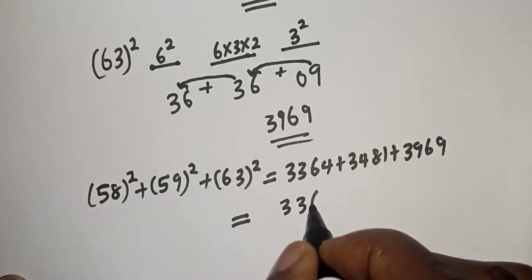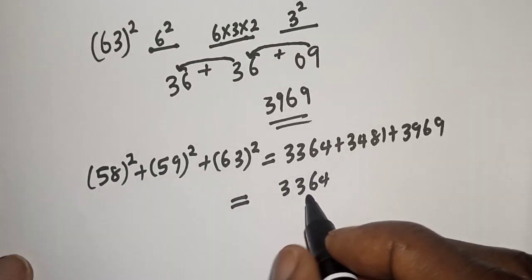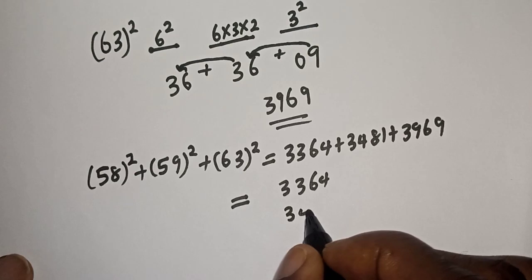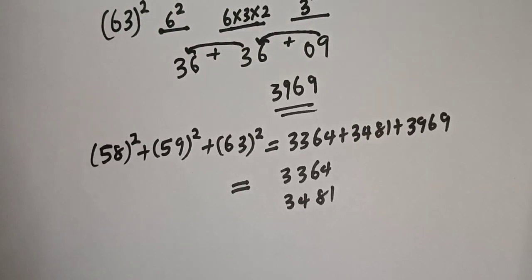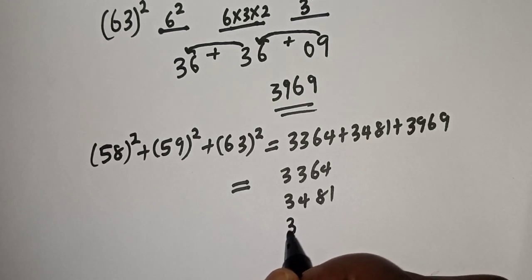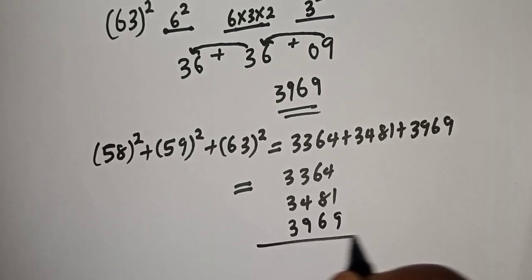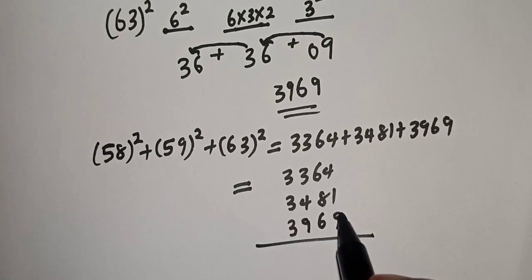3481, and this is 3969. So let's add everything together. Let's add everything together, this plus this plus this plus this.